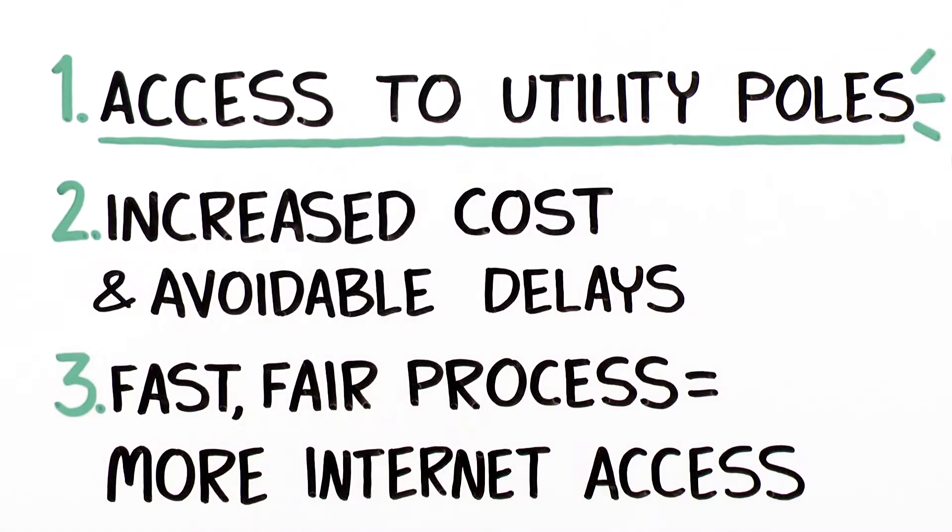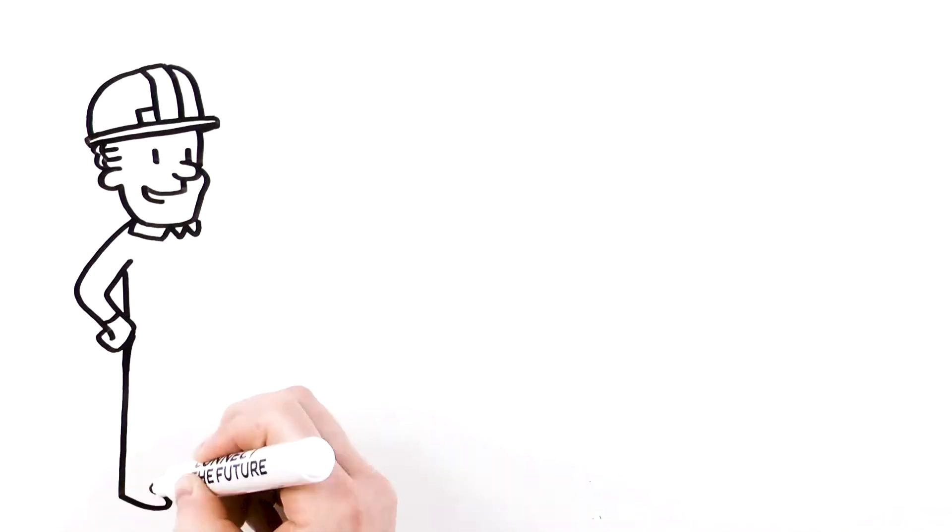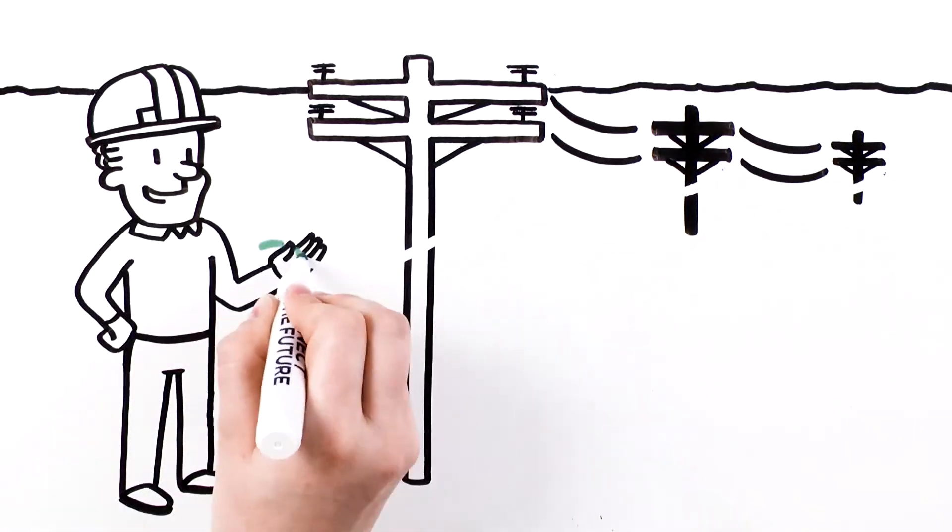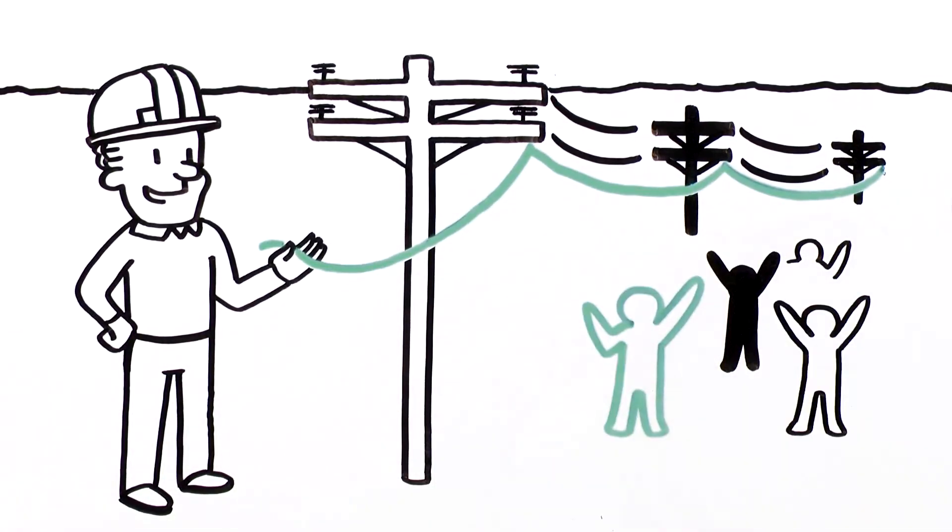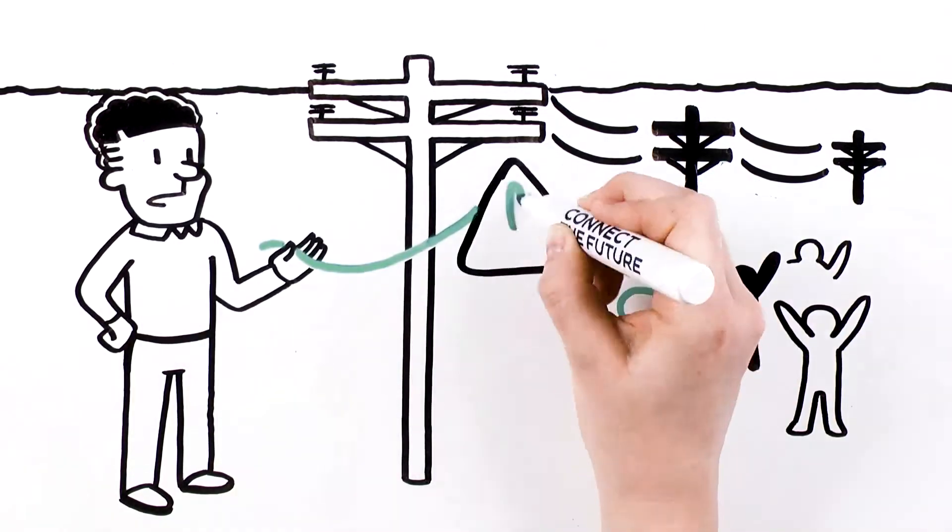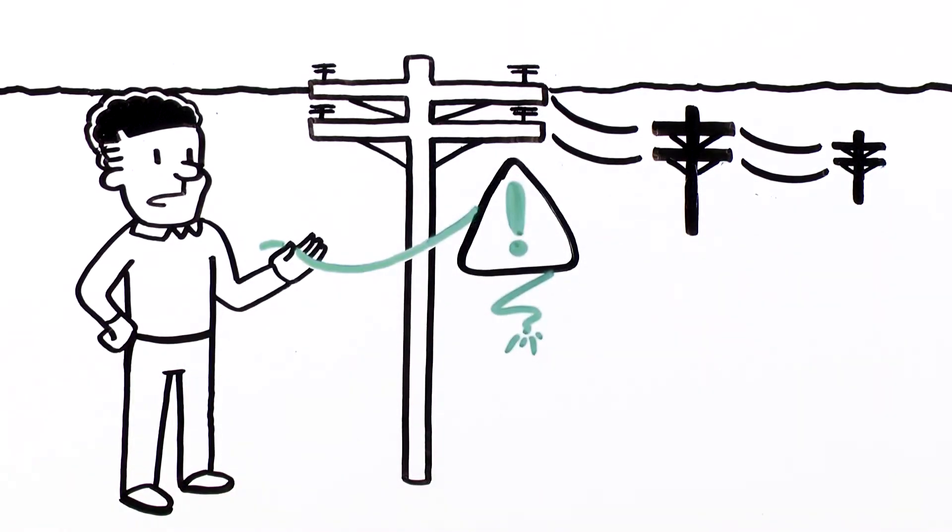Access to utility poles. To reach unserved areas, a broadband provider usually extends their network by attaching cables to utility poles. But broadband providers typically don't own the poles. So first, they need to get access.